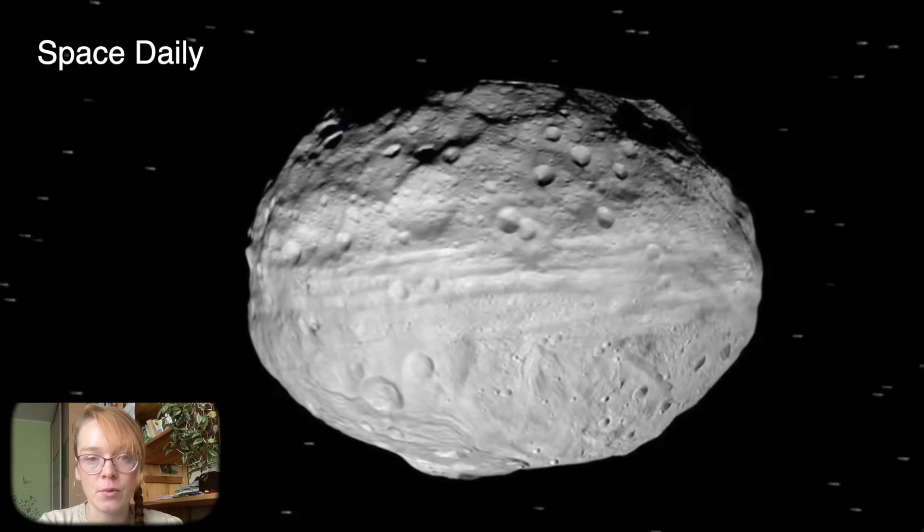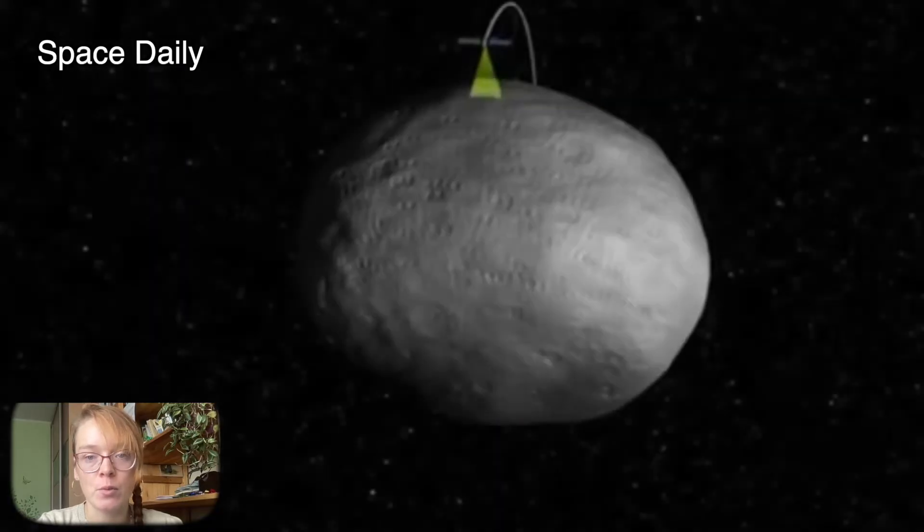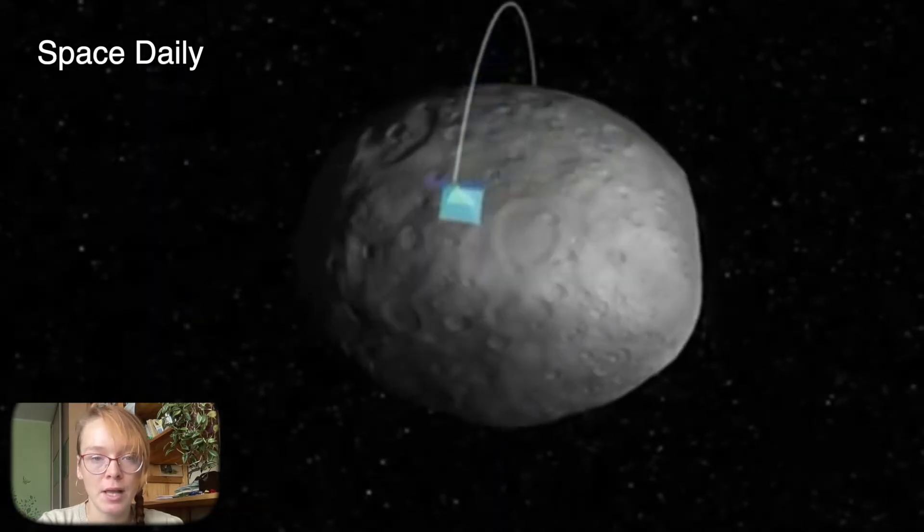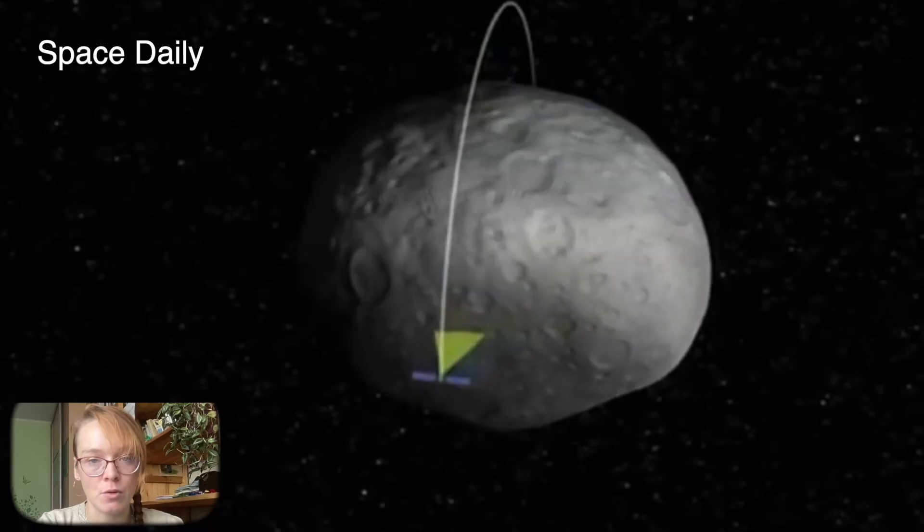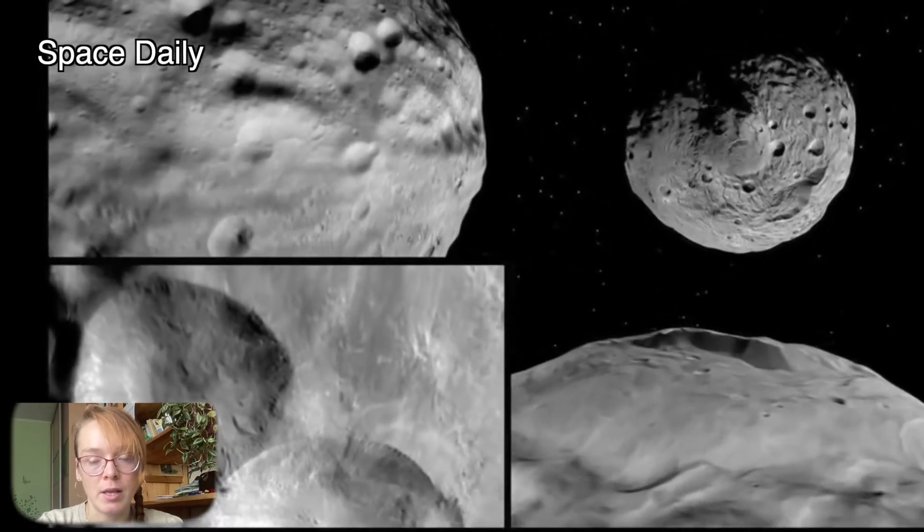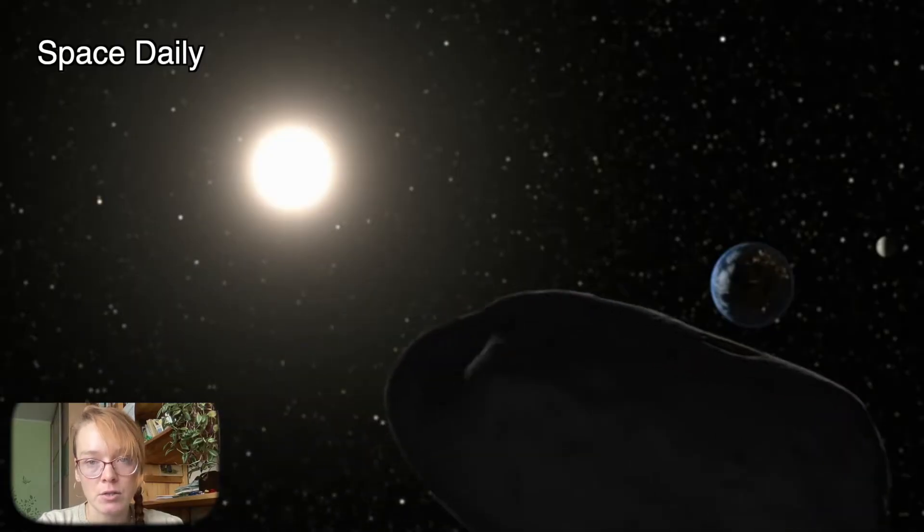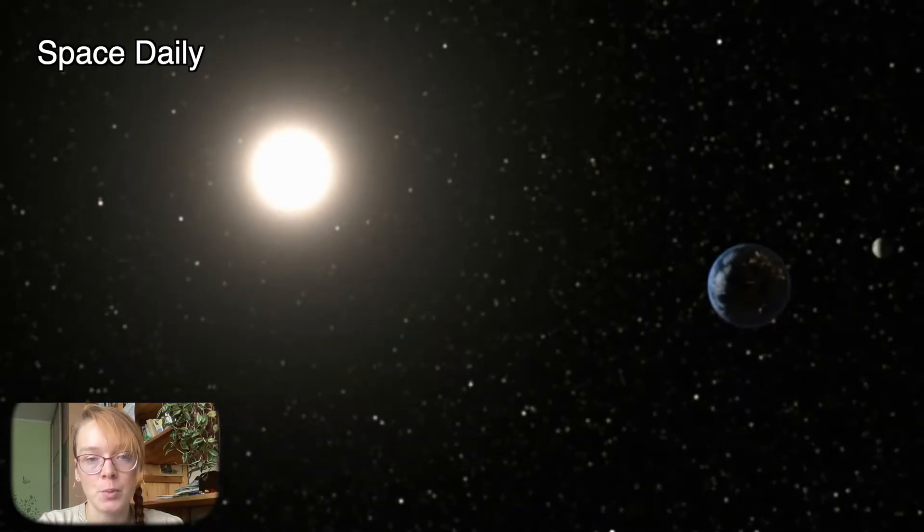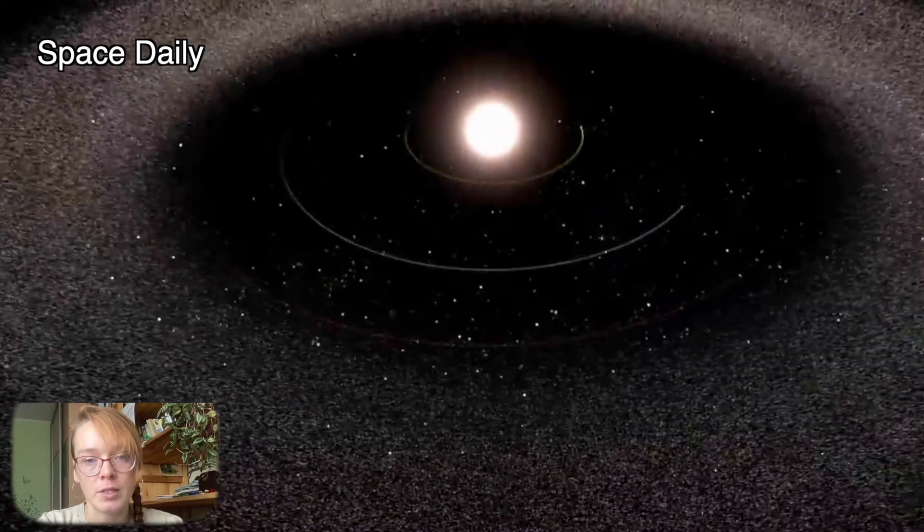During the next mission, Astroforge Broker 2 device will have to approach the selected asteroid and get high-resolution images of its surface. The target asteroid for this mission has not yet been named, but we know that it will be one of the asteroid belt objects between Mars and Jupiter and satellite Broker 2 will arrive at him only 11 months later.